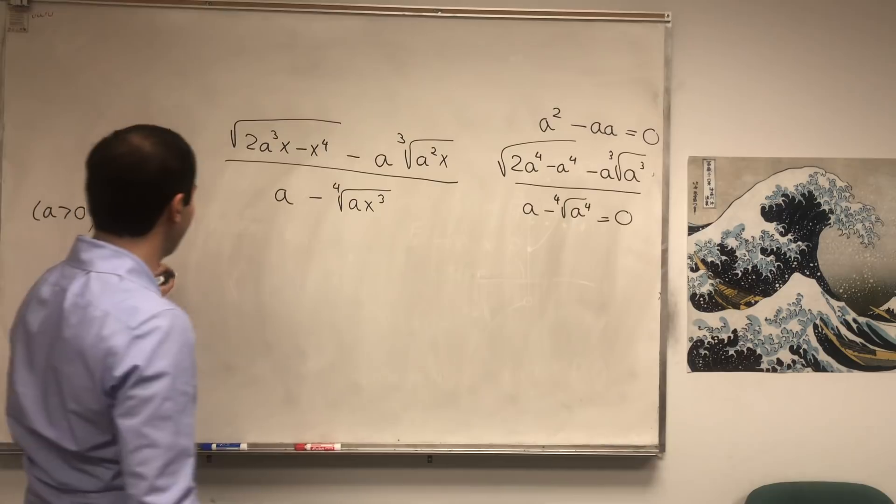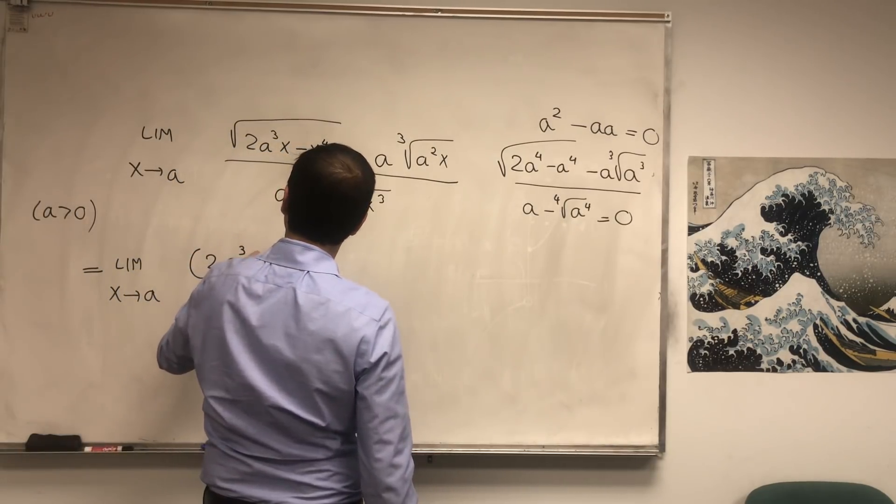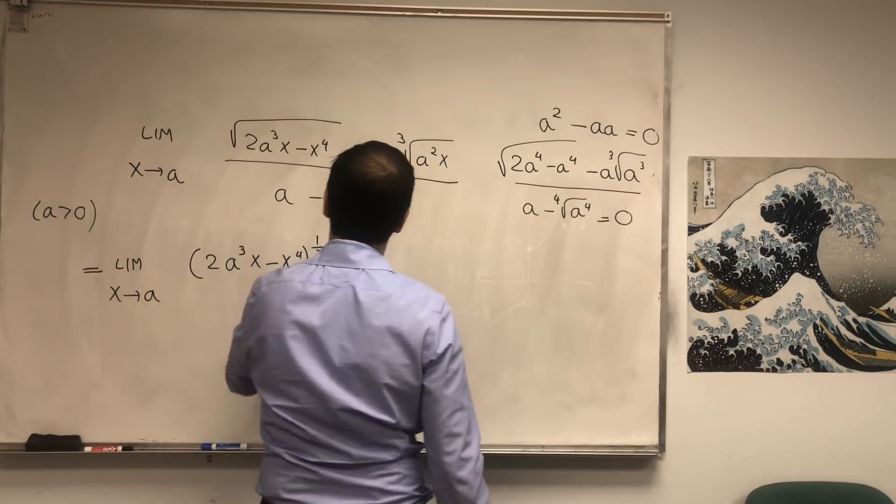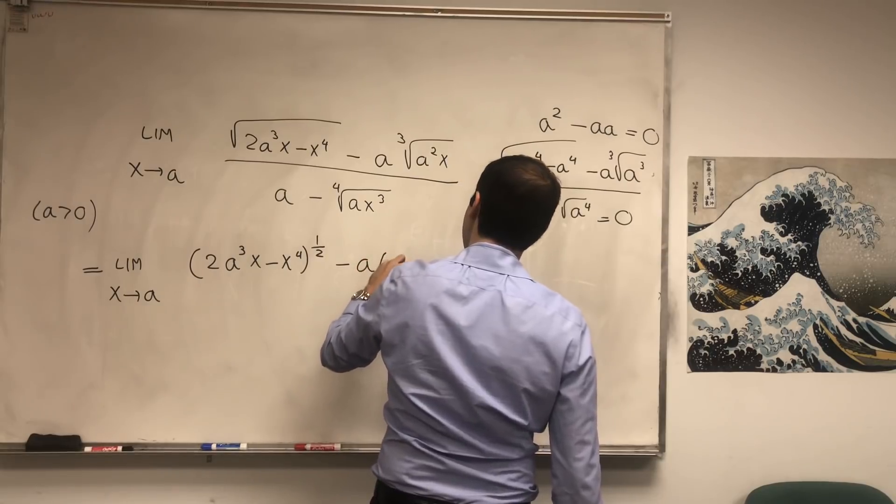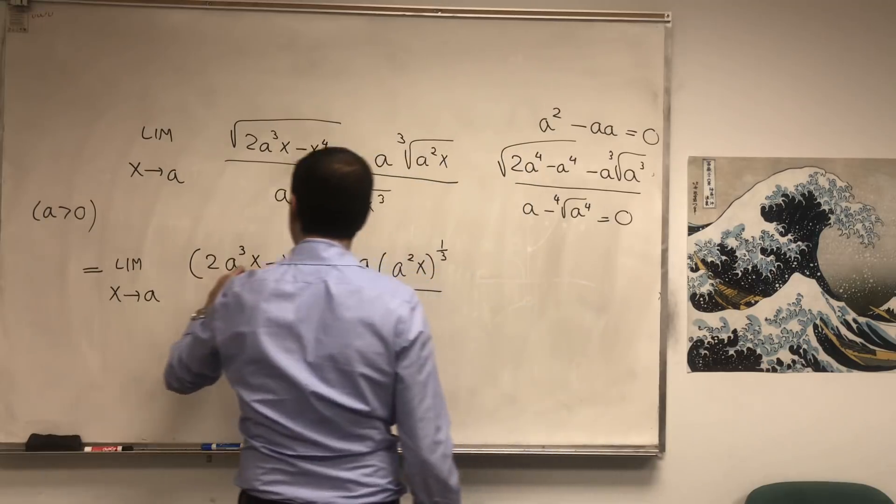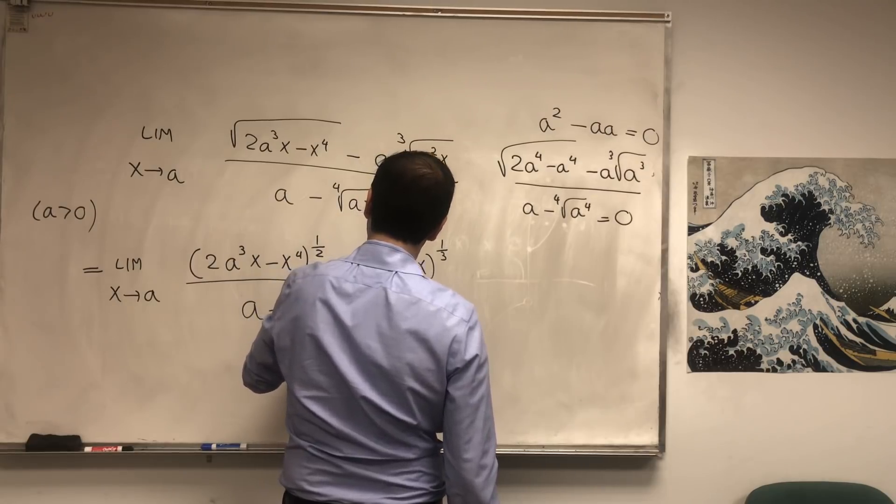But before we do that, let's just write this in terms of power functions, because I'm more comfortable that way. So this becomes (2a³x - x⁴)^(1/2) minus a times (a²x)^(1/3) over a minus (ax³)^(1/4).